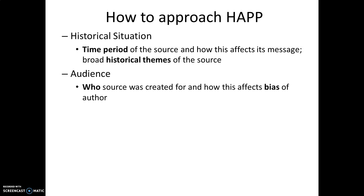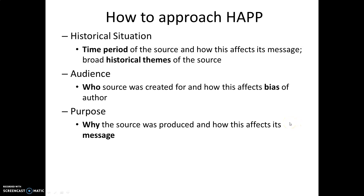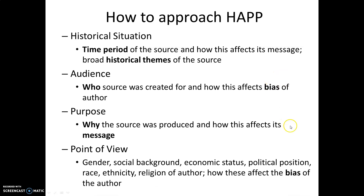Audience: who was this source created for and how does this affect the bias of the author? Make no mistake, every source has a bias — it's just a matter of determining how that bias affects the actual message. So who made the source, and who was it created for? Purpose: why was the source produced? What's the purpose of it? Why was it made, spoken, or created? How does this affect the message? And finally, Point of view — you have to consider how the perspective of the author affects their bias. You'll see this word bias come up on two separate occasions.